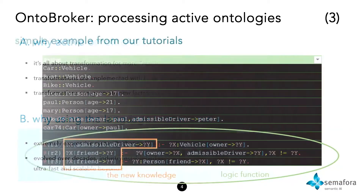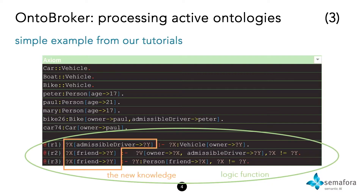Here is a small example from our tutorial on how to generate new knowledge. It's a pretty simple example about vehicles and people — you define certain vehicles, you have people, admissible drivers, and people who own the car. You would derive who might be a friend of someone else by drawing that out of the fact that this person is also an admissible driver. It's a very simple example, but it shows you how you derive new facts from existing facts by applying certain functions. That's the whole point of it.